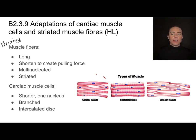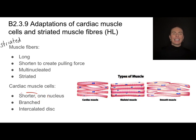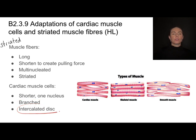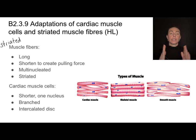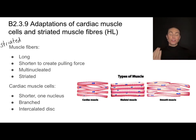Then we have cardiac muscle cells. These have some similarities to striated muscle cells found in skeletal muscles, except they're not multi-nucleated — they have only one nucleus, which is fine because they're much shorter. They are, however, branched, and those branches are connected through features called intercalated discs. This is because it's very important for cardiac muscle cells to contract in unison, to be coordinated — so that structure very much helps their function.